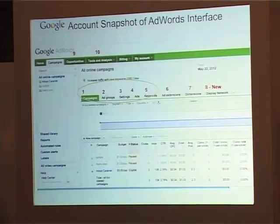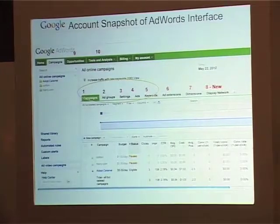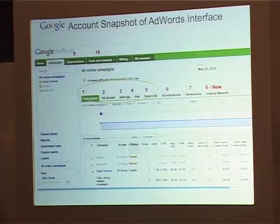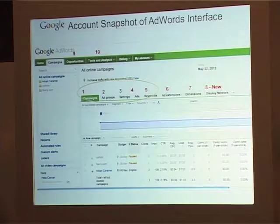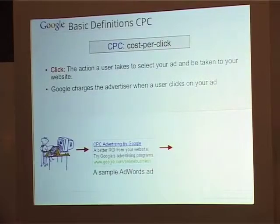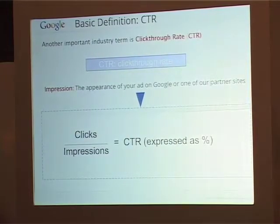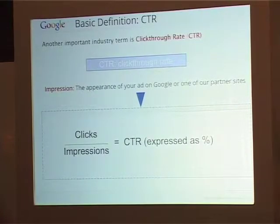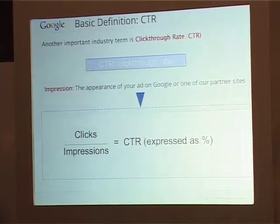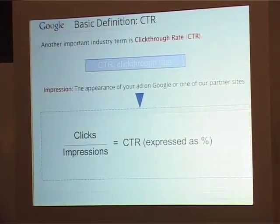This is how the AdWords interface looks — it gives you your CPC, your cost, your click-through rate, total money spent, which keywords are working well, and which are not. CPC is cost per click — what you pay per click when the ad is actually clicked. Advertisers don't pay when an ad shows up; you start paying only when a user clicks on it. CTR is how many impressions have happened versus how many people have actually clicked — that becomes your click-through rate.